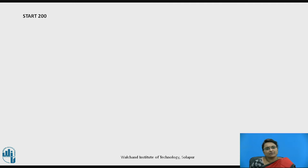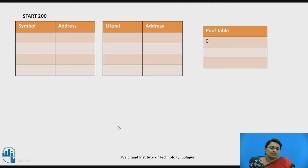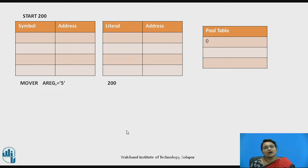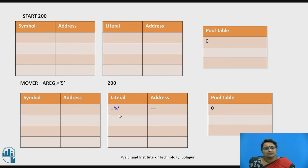The START 200 statement allocates a value for the location counter, setting LC to 200. It does not update any table, so all tables are built with no entries. For the second statement, MOVE R with register A equals 5, the value 5 is a literal and 200 is the location counter value. So the literal table is updated and an entry is made accordingly.